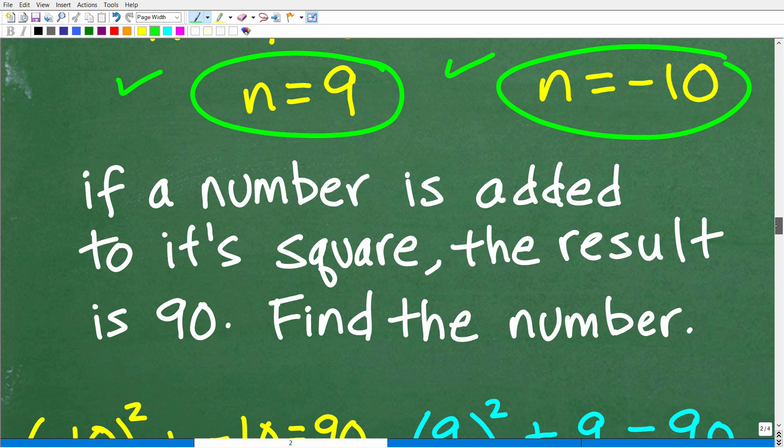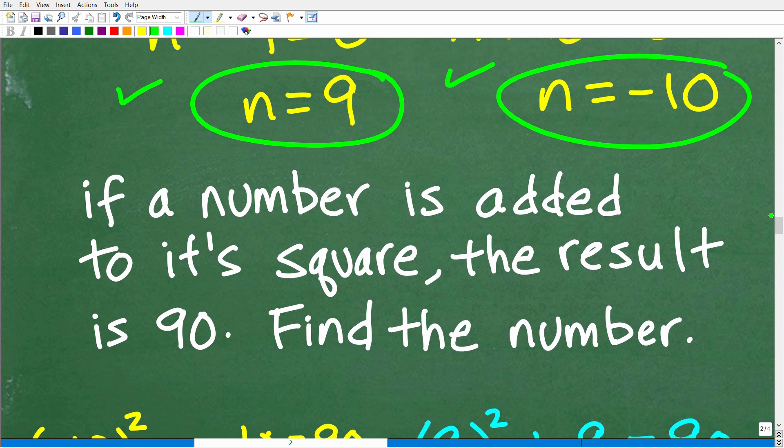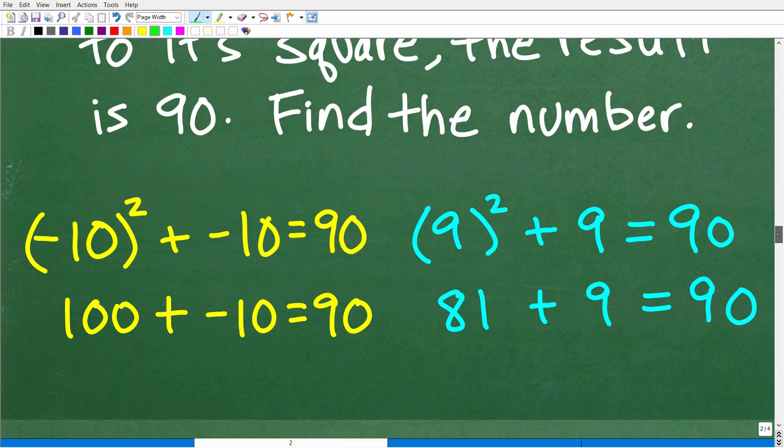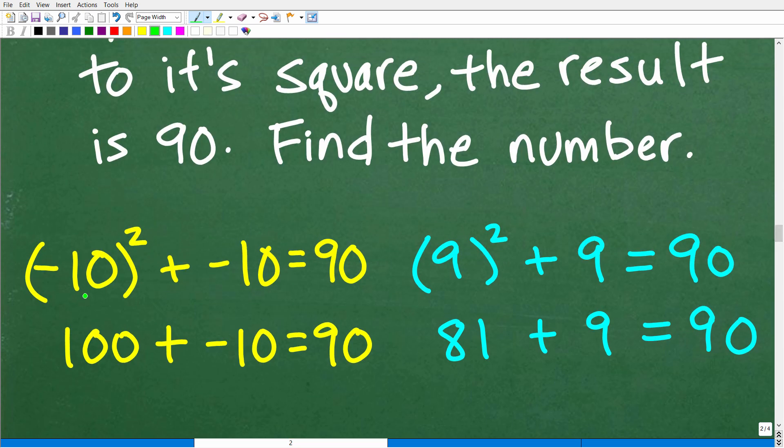If a number is added to its square, the result is 90. Let's find the number or numbers. So we're saying that we have two numbers, 9 and negative 10. Let's check these numbers and see if that is the case. We'll start with negative 10. We're going to take negative 10 and square it, and then we'll add it to itself. This is the number added to its square. So negative 10 squared is 100 plus negative 10. Oh wow, this is working. 100 plus negative 10 is 90. That is fantastic.